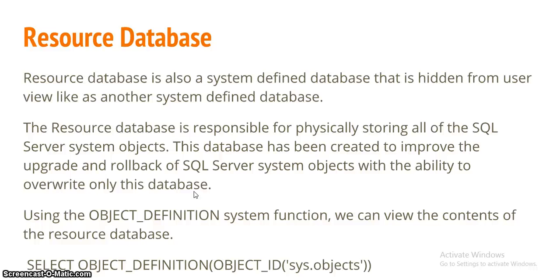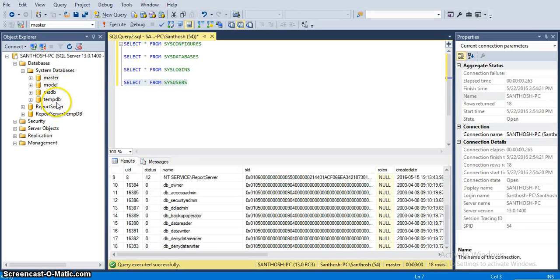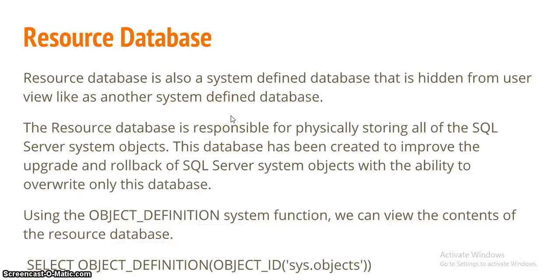The resource database is a system-defined database that is hidden from the user view. If you look at the SQL Server databases directly, you cannot see the resource database. It is responsible for physically storing all SQL Server system objects. This database was created to improve the upgrade and rollback of SQL Server system objects by allowing only this database to be overridden.